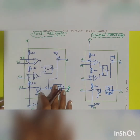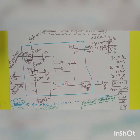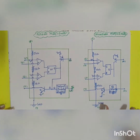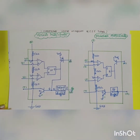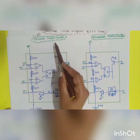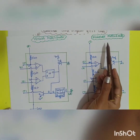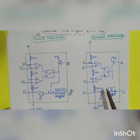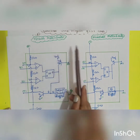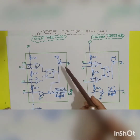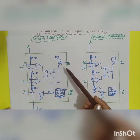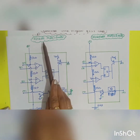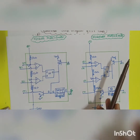In the last session we covered the functional block diagram of the 555 timer. Today we will see the common modes of operation: the astable multivibrator and the monostable multivibrator. The functional diagram has been redrawn twice — once for astable and once for monostable — and we are going to modify it accordingly.